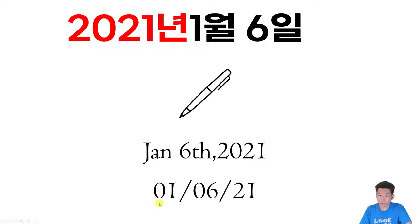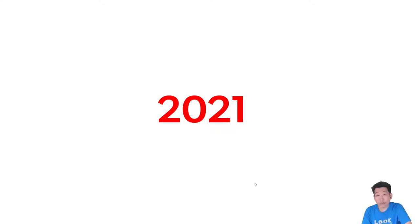아니면 이렇게 해도 좋아요. January를 그냥 01이라고 했죠? 그 다음에 06, 달, 그 다음에 1, 그 다음에 연도를 집어넣죠. 암기해 주시면 되겠죠? 2021 할 수 있고요, 아니면 2021 해도 좋습니다.